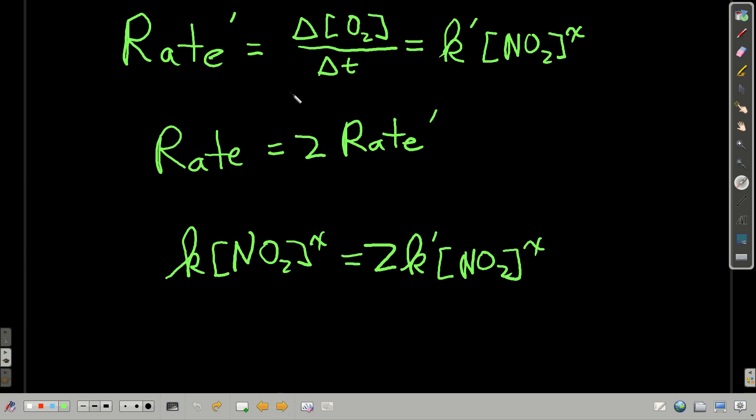So we could write another rate law, rate prime, this prime means it's different than the one we wrote before, which is equal to just a change in the concentration of oxygen over time, and that'll be equal to some different constant called K prime. Again, at the initial rate will be only involved concentration of nitrogen dioxide to the power X, which, by the way, this power right here, we don't know it.